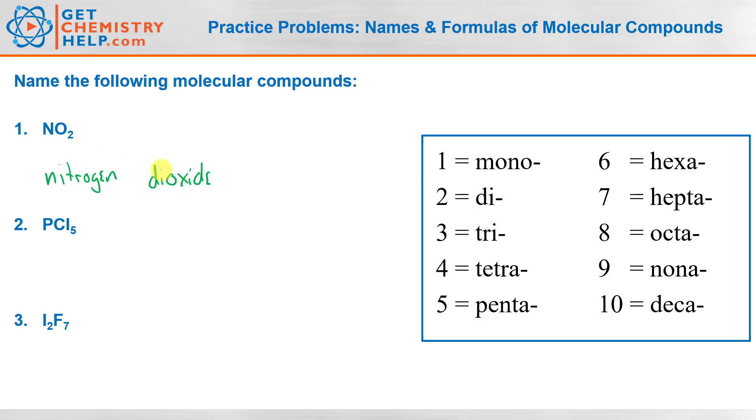How about PCl5? Well, P is phosphorus and again we don't use mono on the first nonmetal if there's only one. Cl5, well Cl is chlorine. Again, the second nonmetal you change the ending to -ide, so that becomes chloride. The prefix for five is penta, so we put pentachloride. That's all one word, so phosphorus with the space and then pentachloride all one word.